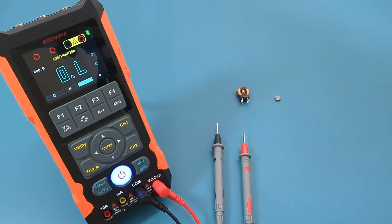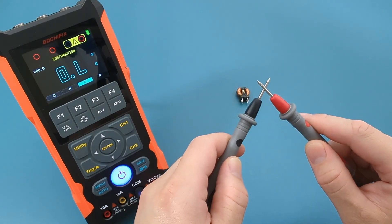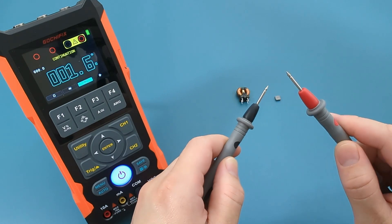To test an inductor, turn on your multimeter and set it to the continuity and resistance mode. Touch the probes together to make sure the multimeter is functioning correctly. You should hear a beep if it's working properly.